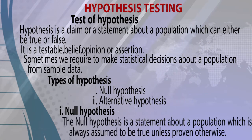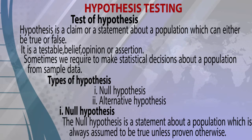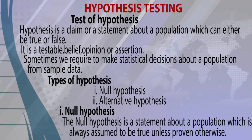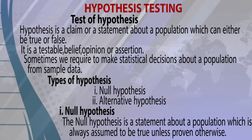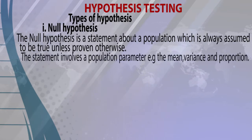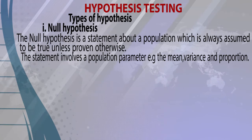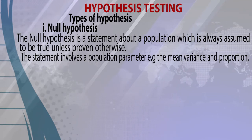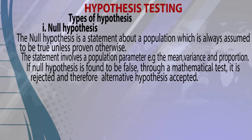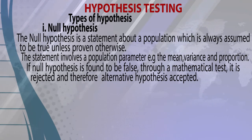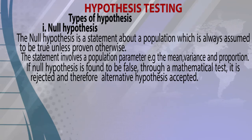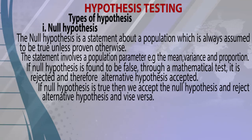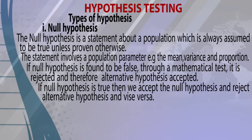The null hypothesis is a statement about the population which is always assumed to be true unless proven otherwise — that is, unless proven otherwise through accidental fluctuation of sampling. The statement involves a population parameter, for example the mean, the variance, or proportion. If the null hypothesis is found to be false through a mathematical test, it is rejected.